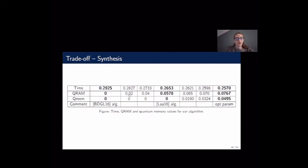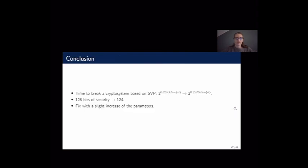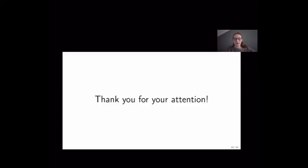To conclude: we showed with this work that the time to break lattice-based cryptosystems is lower than previously believed. Concretely, a cryptosystem previously claimed to have 128 bits of security actually has 4 bits fewer, and a slight increase in parameters is required to compensate. Thank you very much for your attention.